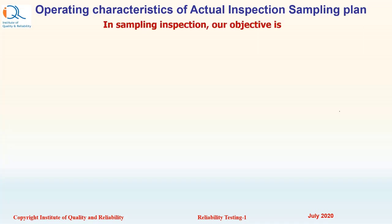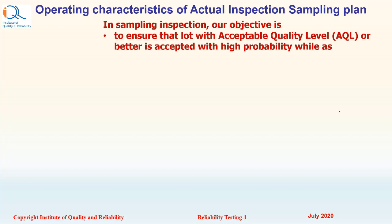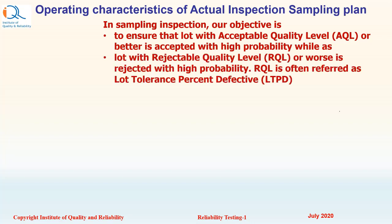In sampling inspection, our objective is to ensure that a lot with acceptable quality level AQL or better is accepted with high probability. We cannot reach one, but we ensure high probability. And a lot with rejectable quality level or worse is rejected with high probability. We cannot have zero probability of acceptance there, but we ensure that for RQL the probability of acceptance is very low. RQL is often referred to as lot tolerance percent defective or LTPD.